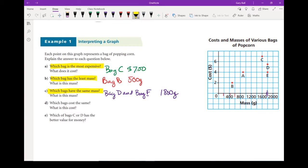Next question asks, which bags cost the same? Well, I'm looking on the cost axis, looking for two that line up. That would be these two right here. They both have a cost of $4. So my answers are bag A and Bag E, and they both cost $4.